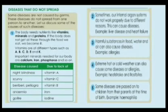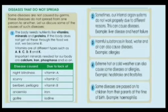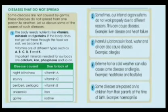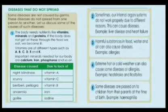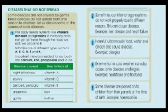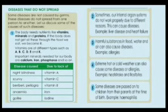Now we will see diseases that do not spread. Some diseases are not caused by germs, and these diseases do not spread from one person to another. First, the body needs nutrients like vitamins, minerals, and proteins. If the body does not get all these through the food we eat, we become ill.